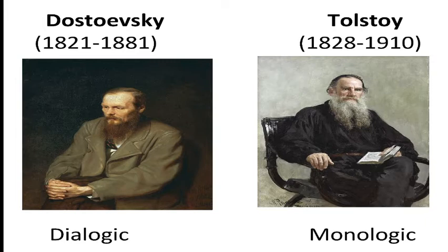Unlike other formalists, Bakhtin looked at language as a social phenomenon. Bakhtin focused primarily on novels. He compared the novels of two Russian authors, Dostoevsky and Tolstoy.